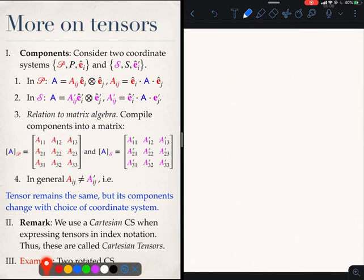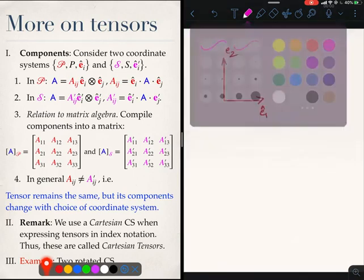I will start by drawing two coordinate systems. The first one is P, which I should draw in red. This is E1, E2.